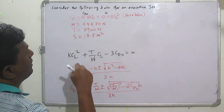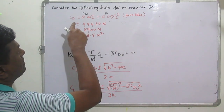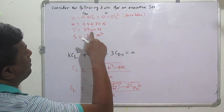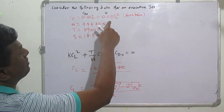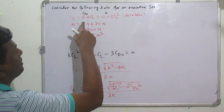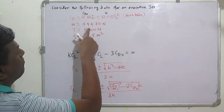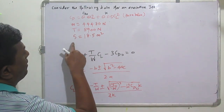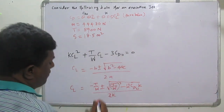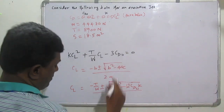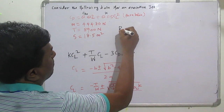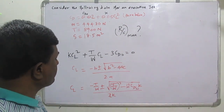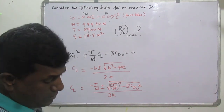For an executive jet, we have the following data. The drag polar equation is given as CD = 0.02 + 0.05·CL², which is a parabolic drag polar equation. In this, CD₀ is 0.02 and K is 0.05. The weight W is 44,480 Newton, thrust T is 8,900 Newton, and wing area S is 18.5 m². We have to find out the maximum rate of climb using this equation.